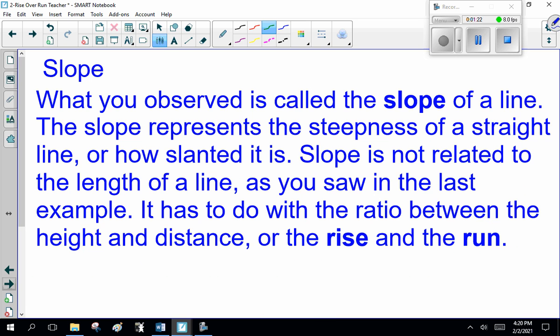Now, what we're talking about here is slope. What you observed is called the slope of a line. The slope represents the steepness of a straight line, or how slanted it is. Slope is not related to the length of a line, as you saw in the last example. It has to do with the ratio between height and distance, or the rise and the run.